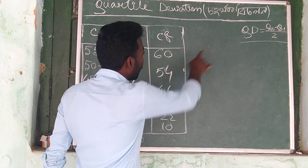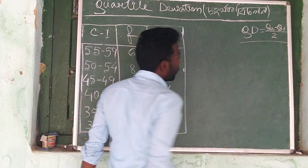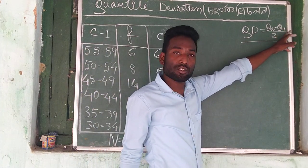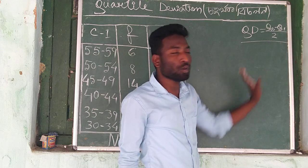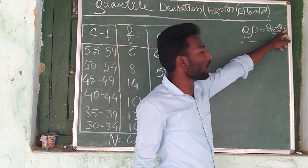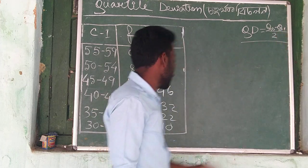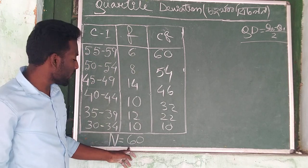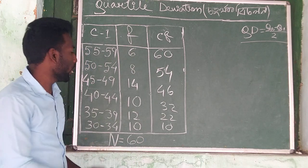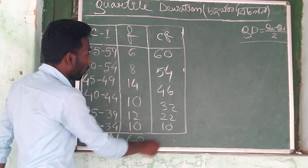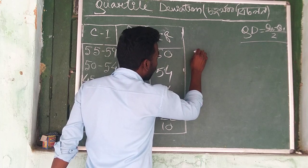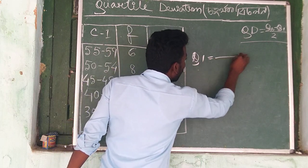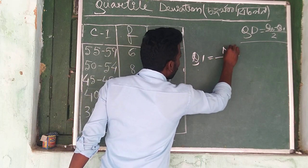So, we can get the quartile division formula. That is Q3 minus Q1 by 2. Let's get Q1. We can get n equal to 60. So we can get Quarter 1. From Quarter 1, we get Q1 equals n by 4.